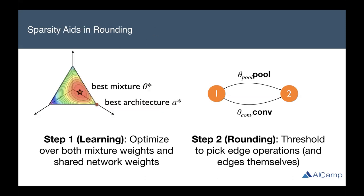One insight we had is that if we think about what the mixture space looks like, each edge is now representable by a probabilistic simplex. Discrete architectures are the corners of the simplex, and we allow the architecture parameters theta to lie anywhere on the surface of this polyhedron shape. The best mixture is almost certainly not going to correspond to the best architecture, because the space of mixtures is just much larger than discrete architectures. If the mixture is very far away from a discrete architecture, we can have severe performance degradations when we perform the rounding. So intuitively, sparse mixtures will have better correspondence to the returned architecture.